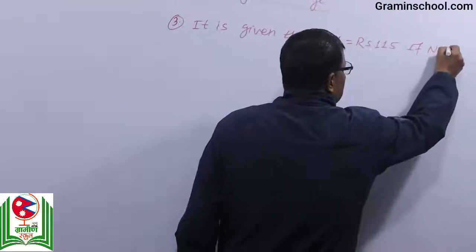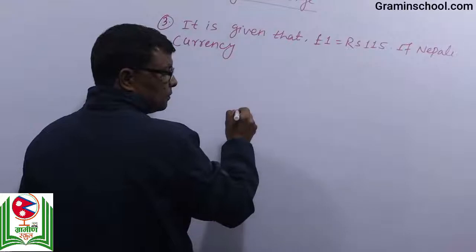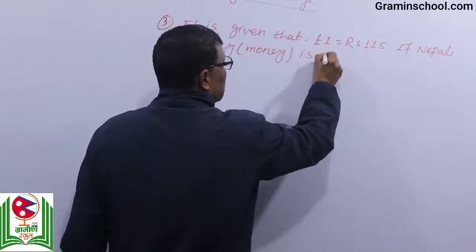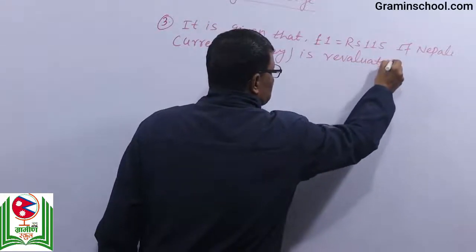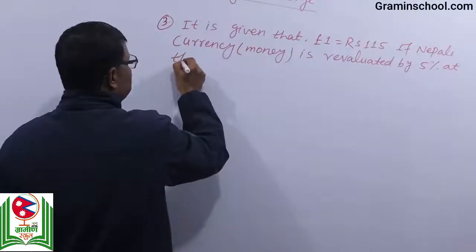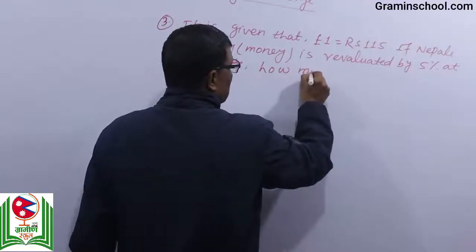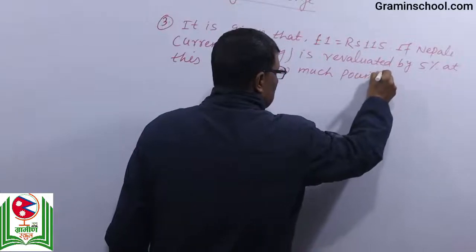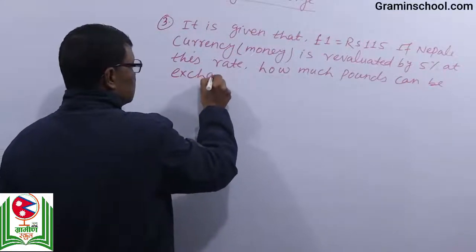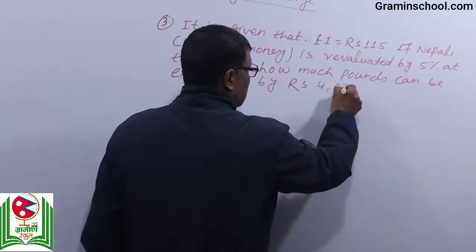If Nepali currency is re-evaluated by 5%, at this rate, how much pound can be exchanged by rupees 4,37,000?